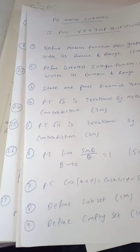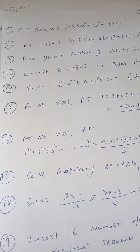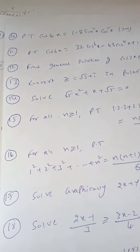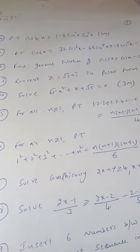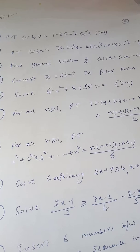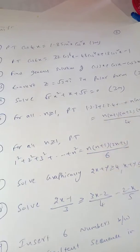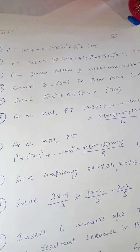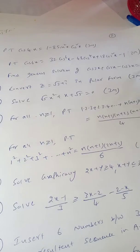Question number 10, prove that cos 4x is equal to 1 minus 8 sin square x cos square x. It's a 3 mark question. Question number 11, prove that cos 6x is equal to 36 cos power 6x minus 48 cos power 4x plus 18 cos square x minus 1. It is also a 3 mark question. Find the general solution of cos 3x plus cos x minus cos 2x. This is also a 3 mark question.